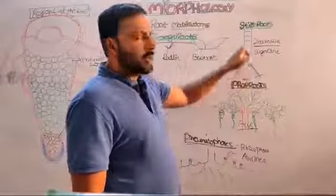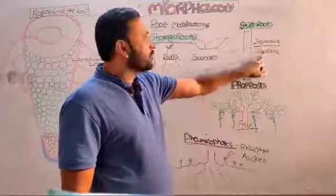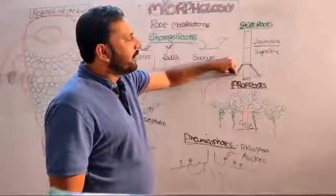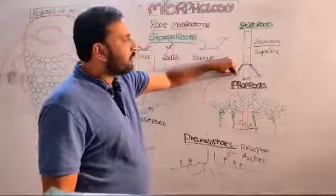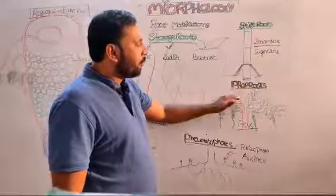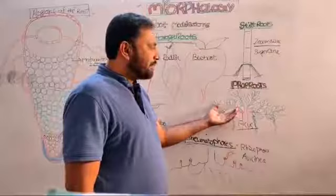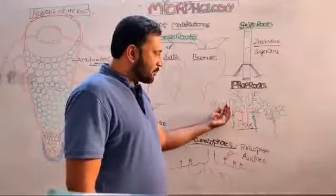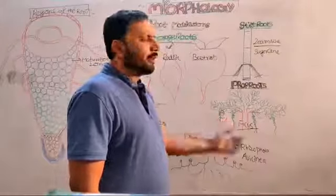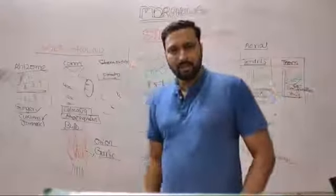Stilt roots and prop roots are mechanical roots. Stilt root example: Maize and sugarcane — from the lower nodes, adventitious roots form which give mechanical strength. In prop roots, example Ficus (banyan tree), from the bases of the branches some special adventitious roots form which give mechanical strength.